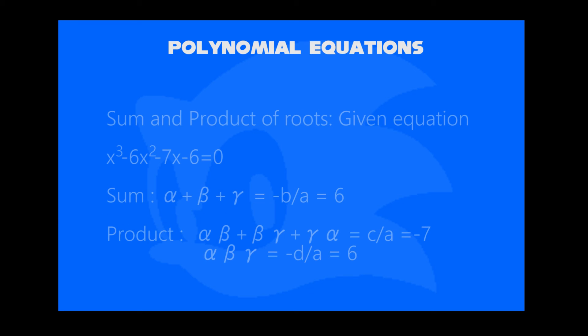One thing you can solve by roots of equation. We have sum of roots, now we have a third root of gamma, equal to minus b by a, which is 6. Product of two consecutive roots equals c by a, which is minus 7. And product of three consecutive roots, alpha, beta, and gamma, we therefore equal to minus d by a, which is 6.